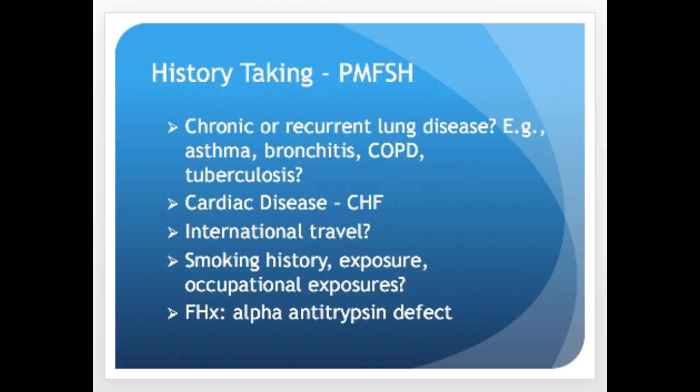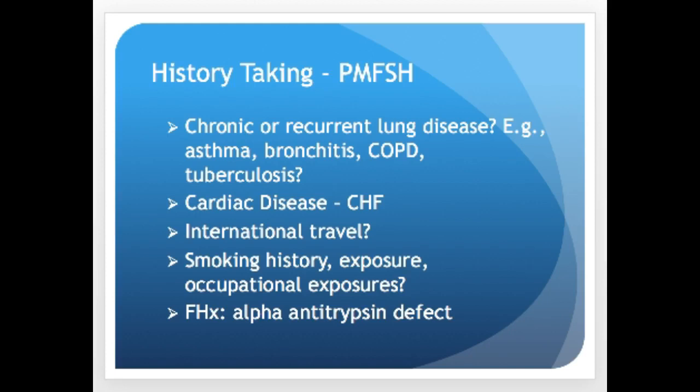For past medical, family, and social history, some areas are more pertinent. Ask about chronic or recurrent lung diseases — asthma, bronchitis, COPD, tuberculosis — and cardiac diseases like CHF. Ask about international travel, personal smoking history, occupational exposures, and family history of early COPD. The alpha-1 antitrypsin defect is often misdiagnosed as COPD in younger people, so asking about family history of chronic respiratory diseases or alpha-1 antitrypsin deficiency is important.